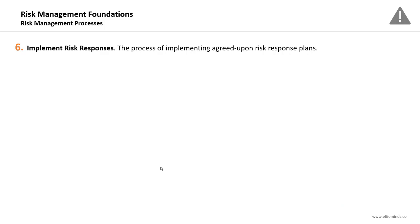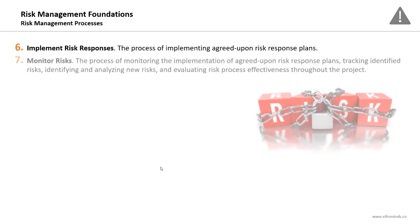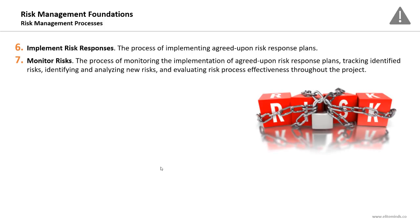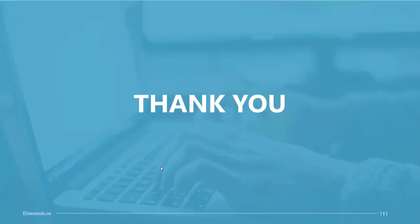Process number six is Implement Risk Responses — the process of implementing the agreed-upon risk response plans, and it's part of the executing process group. Process number seven is Monitor Risks — the process of monitoring the implementation of agreed-upon response plans, tracking identified risks, identifying and analyzing new risks, and evaluating risk process effectiveness throughout the project. In summary: five processes in planning, one in executing, and one in monitoring and controlling. This is all for the risk management foundations section.